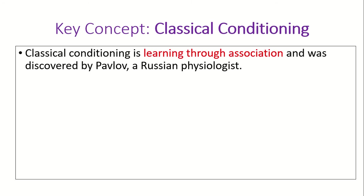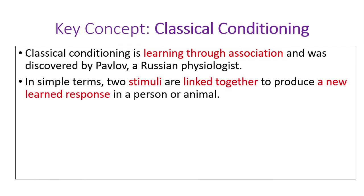Classical conditioning is learning through association, and this was first discovered by Ivan Pavlov who is a Russian physiologist. In simple terms, this basically means that two stimuli are linked together to produce a new learned response in a person or animal. So you will learn to associate something with something else, and we'll have a look at some examples of this in a minute.